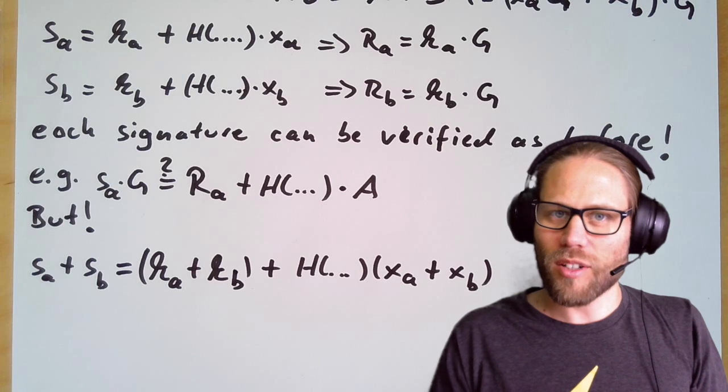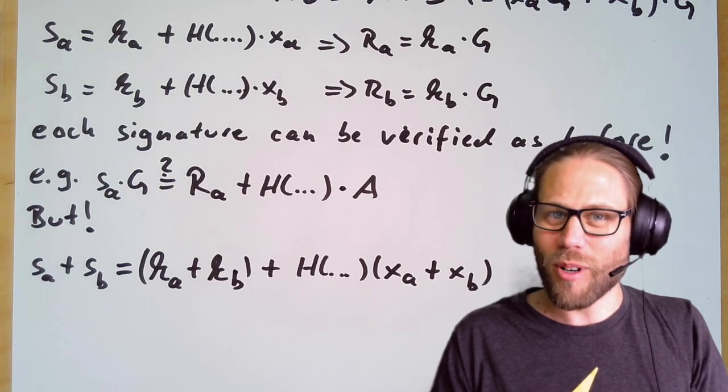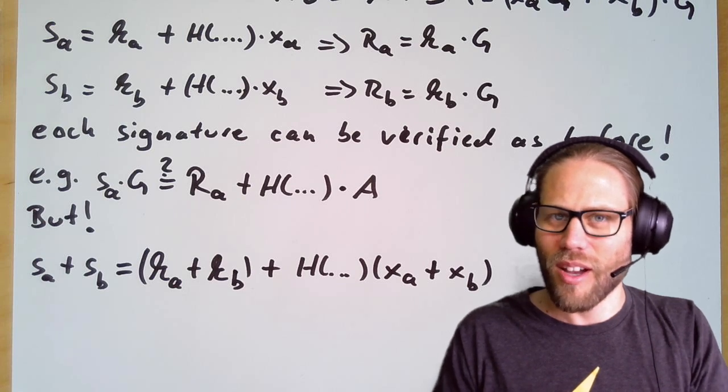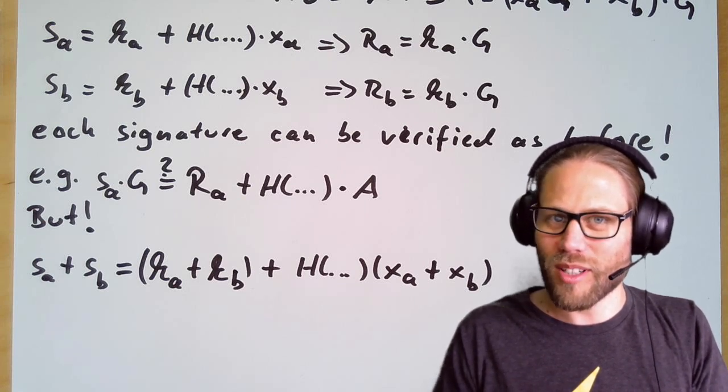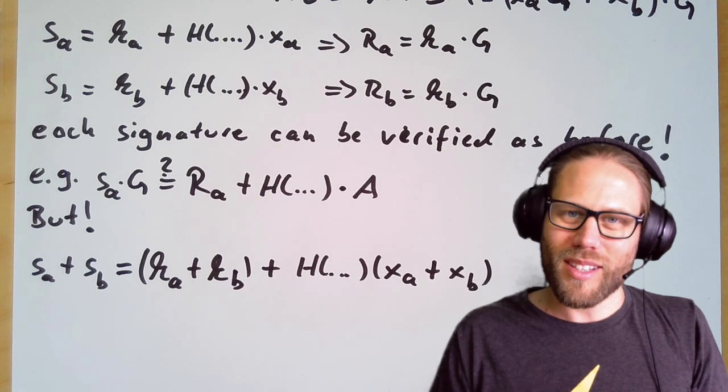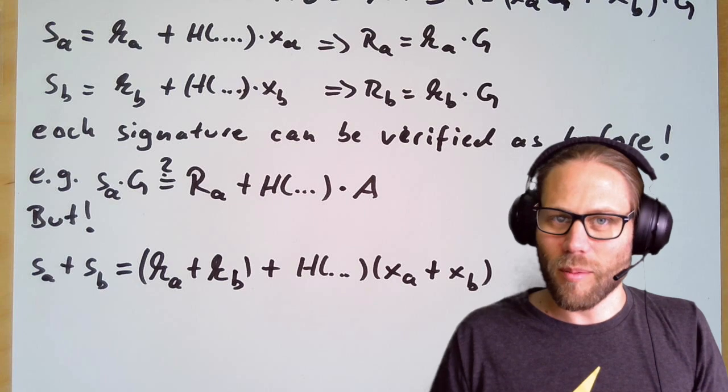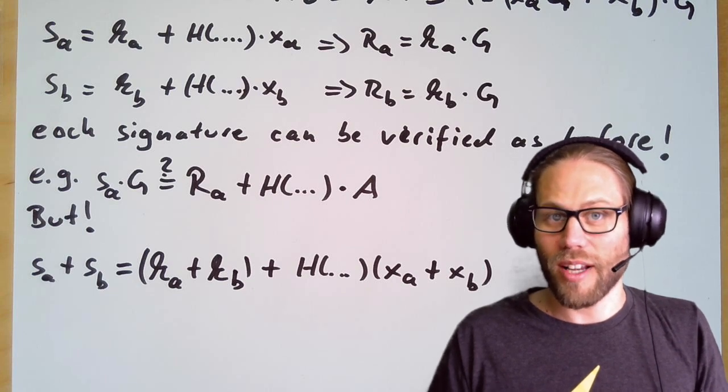But here in this equation you can actually see that the private keys have been added. And the thing is we are doing this without exchanging the private keys themselves. The private key is hidden in this entire summation. There is this random value which we also didn't reveal. So in that sense it is okay to do that. And the only question now is what does this help us, and this is what we're going to look at right now.